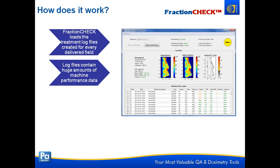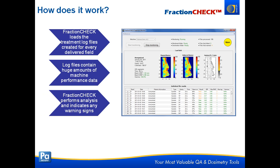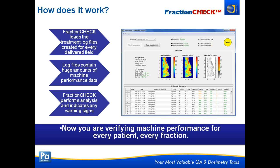These log files contain enormous amounts of machine performance data — just one of them usually contains hundreds of thousands to millions of results. We have to analyze all of those results, apply pass/warn/fail tolerances to everything, and then give the physicists summaries of what happened, indicating if something warned or failed. FractionCheck is very good at summarizing all this information, and once we do that, we're performing machine performance QA for every patient and every fraction they are treated in just a couple of minutes.